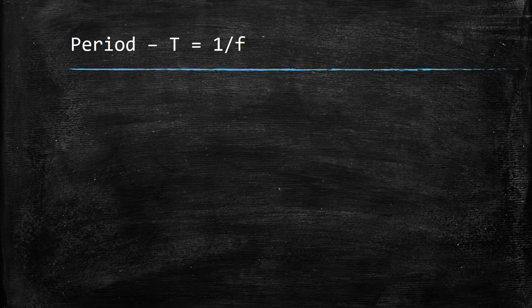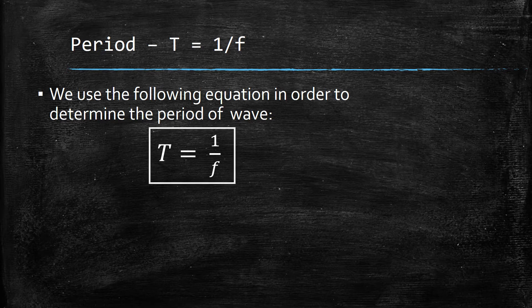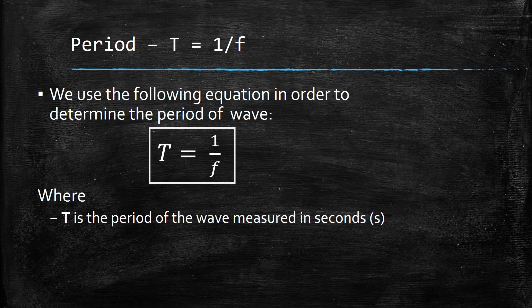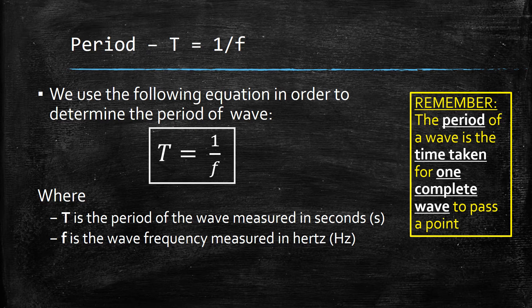Period: capital T is equal to one over F. We use this equation in order to find the period of a wave. Note, capital T is used for period as opposed to lowercase t used for time. This equation appears on the relationship sheet, so we're putting it into a box. Within this equation, T is the period of the wave measured in seconds, and F is the wave frequency measured in Hertz. We should remember that the period of a wave is the time taken for one complete wave to pass a point.